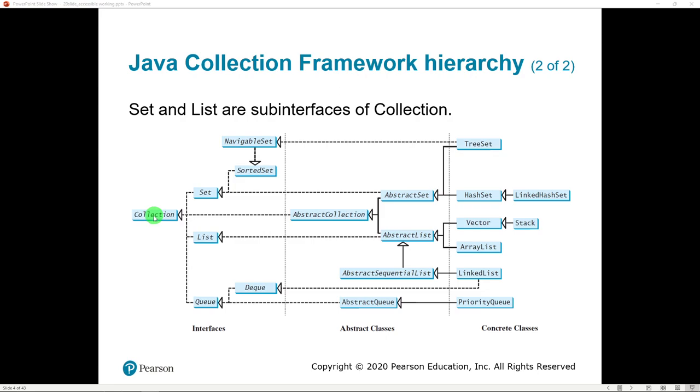Between this dotted line and this dotted line are abstract classes. These are provided for us to actually write a lot of the implementation for these interfaces. The collection says you have to have X, Y, and Z methods. Abstract Collection does a good job of writing X, Y, and Z for us - not everything, but the abstract classes write a lot of the things that are required by the interfaces.